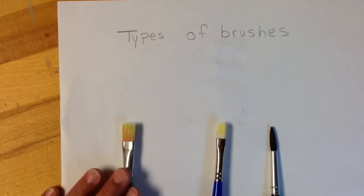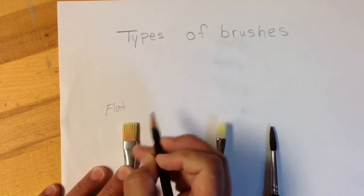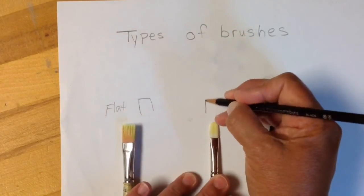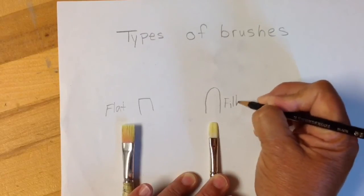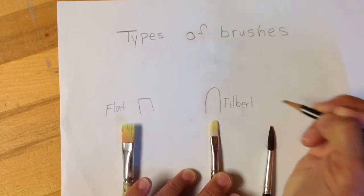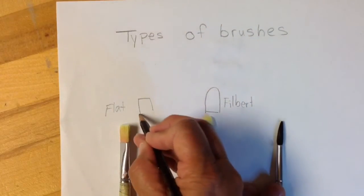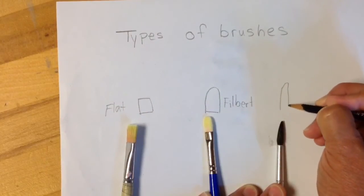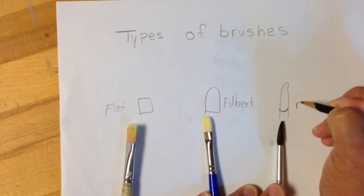On your worksheet, I want you to draw these types. Flat brush, draw a square top. A filbert brush, it's a rounded top. And a round brush has a rounded handle. It hasn't been flattened. Round brush for detail.